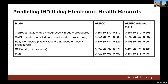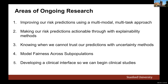Feel free to ask questions — these are quick talks. We also investigated whether electronic health records could predict these diseases. For ischemic heart disease, we used XGBoost with vitals, labs, diagnoses, medications, and procedures; a neural network tabular model called SAINT, which performed slightly worse; a fully connected network; and PCE (Pooled Cohort Equations), a commonly used cardiovascular risk score, which performed slightly worse than the other methods.